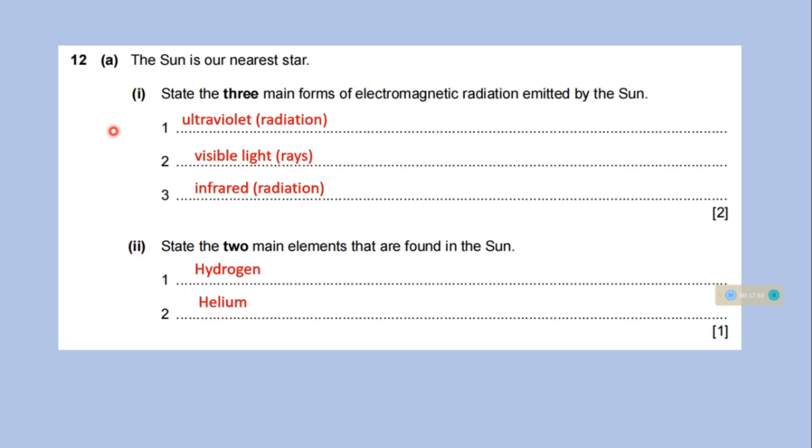The sun is our nearest star. State the three main forms of electromagnetic radiation emitted by the sun: ultraviolet, visible light and infrared. State the two main elements that are found in the sun: hydrogen and helium.